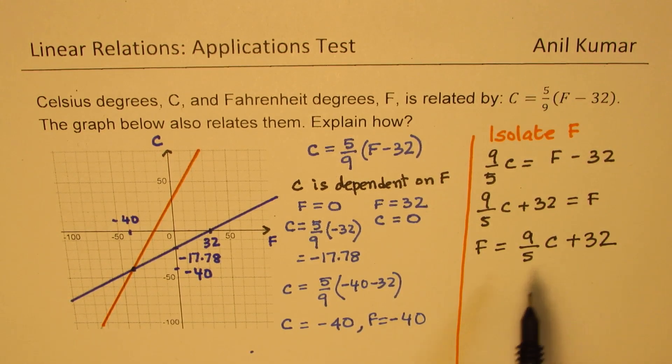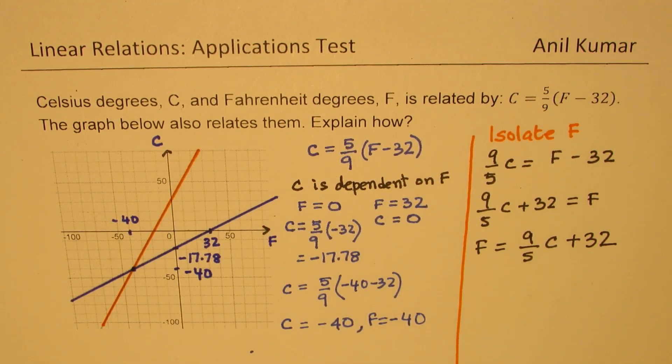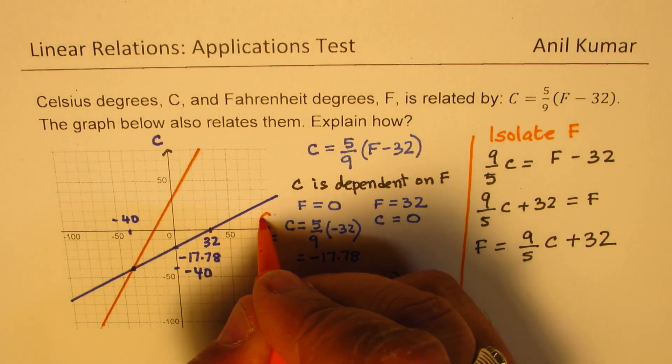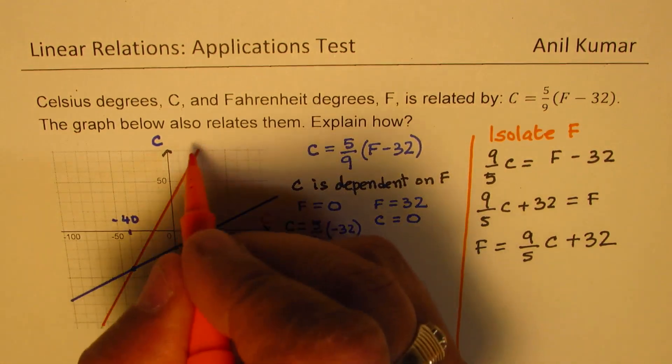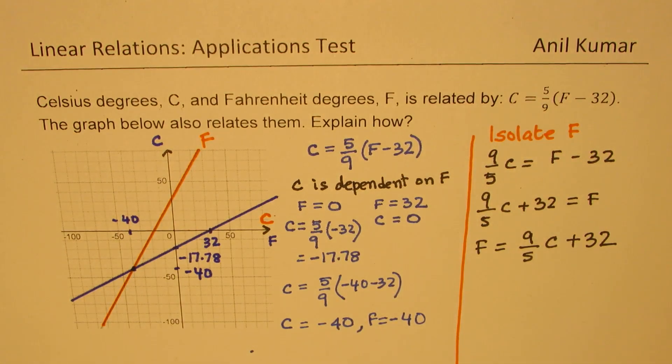This particular formula is being represented by this orange line here. The other line, independent variable is C for us. So now this becomes C, and that becomes F. These points, which we calculated earlier, gets interchanged.